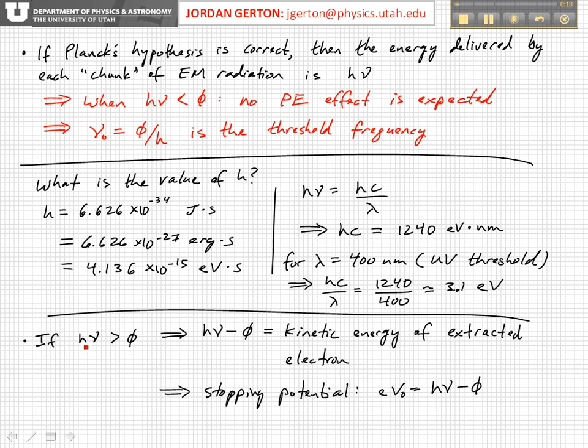If the frequency times H, so if the energy chunk is greater than the stopping potential, then the difference between the energy chunk H nu and the work function is basically equal to the kinetic energy of the electron that is kicked out. So any extra energy above the work function goes into kinetic energy for the electron, which means that it's going to be moving faster.